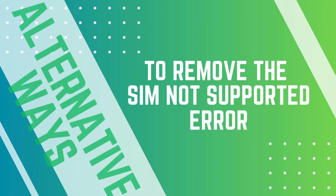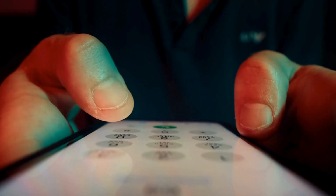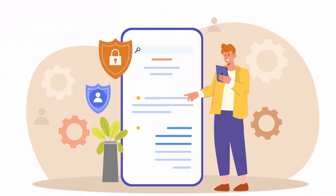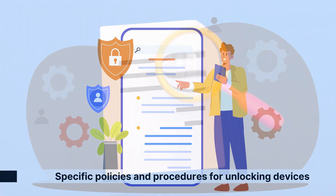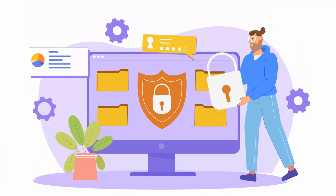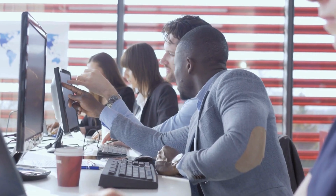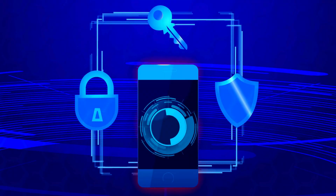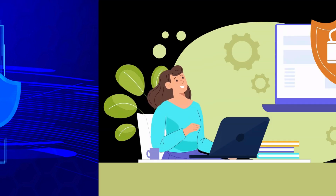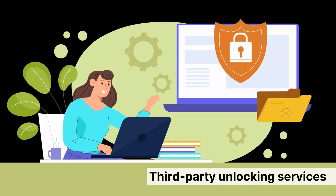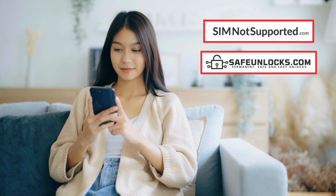Here are some more alternative ways to remove a carrier lock from your iPhone. One of the best and most straightforward methods is to contact your carrier directly. Many carriers have specific policies and procedures for unlocking devices, especially if you've met certain requirements like completing your contract or paying off your phone in full. Just give them a call or visit their website to start the process. Another legal option is to use an official unlocking service provided by the carrier. Some carriers offer this as a paid service if you don't meet the usual criteria for a free unlock. For those who prefer a DIY approach, you can also try third-party unlocking services like SimNotSupported.com, Safe Unlocks, UnlockHere, or UnlockMaker.com. These services offer user-friendly solutions to unlock your iPhone quickly and safely.